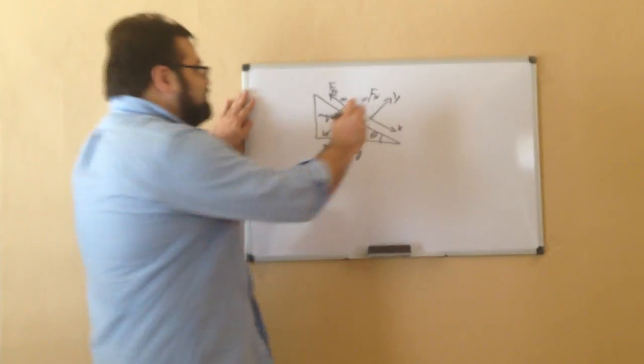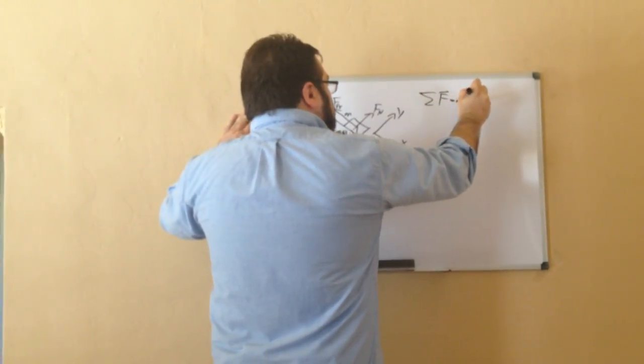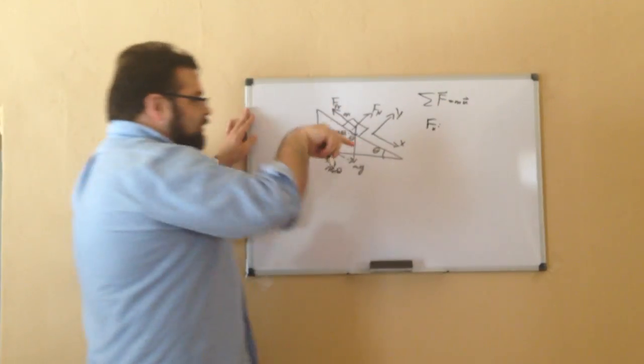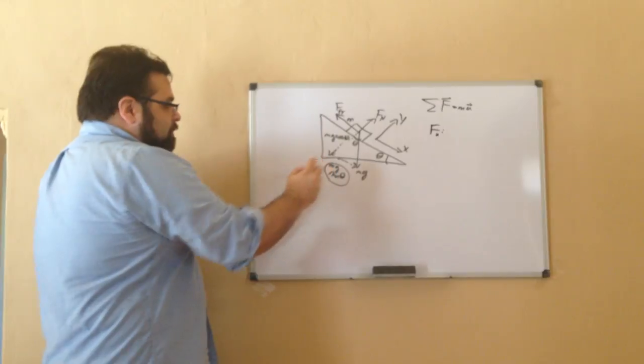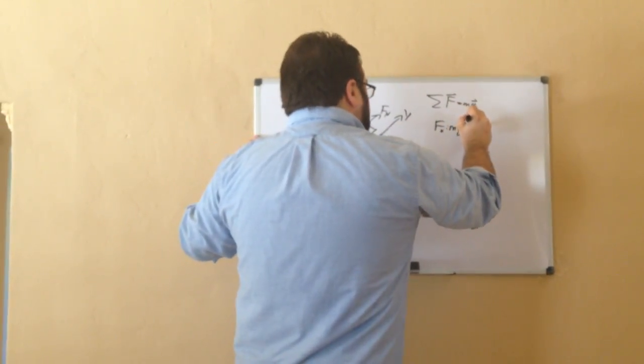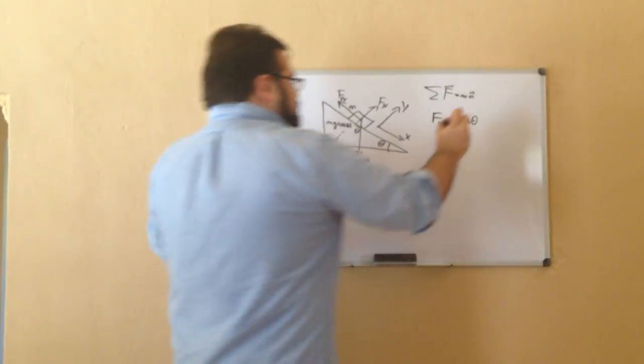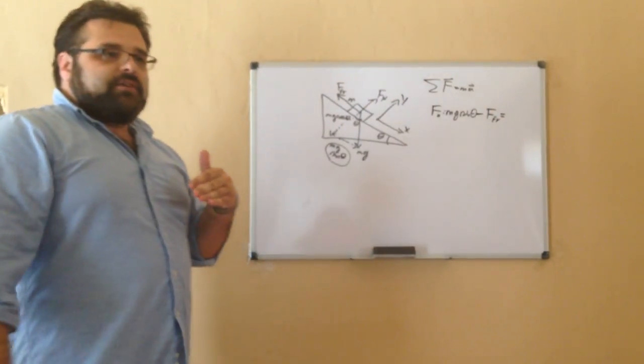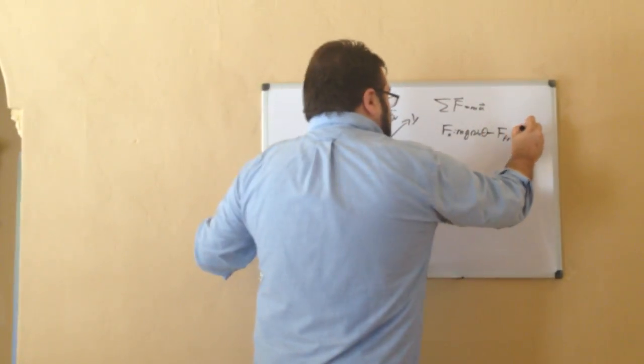Now I'll do Newton's second law again for the x part going this way. I've got this part here pushing in the positive direction, so that's going to be mg sine theta. And I've got friction going upwards, so that will be negative here. And I'm trying to find the point at which it's just about to start to accelerate, but it's not accelerating, so the acceleration will be zero.